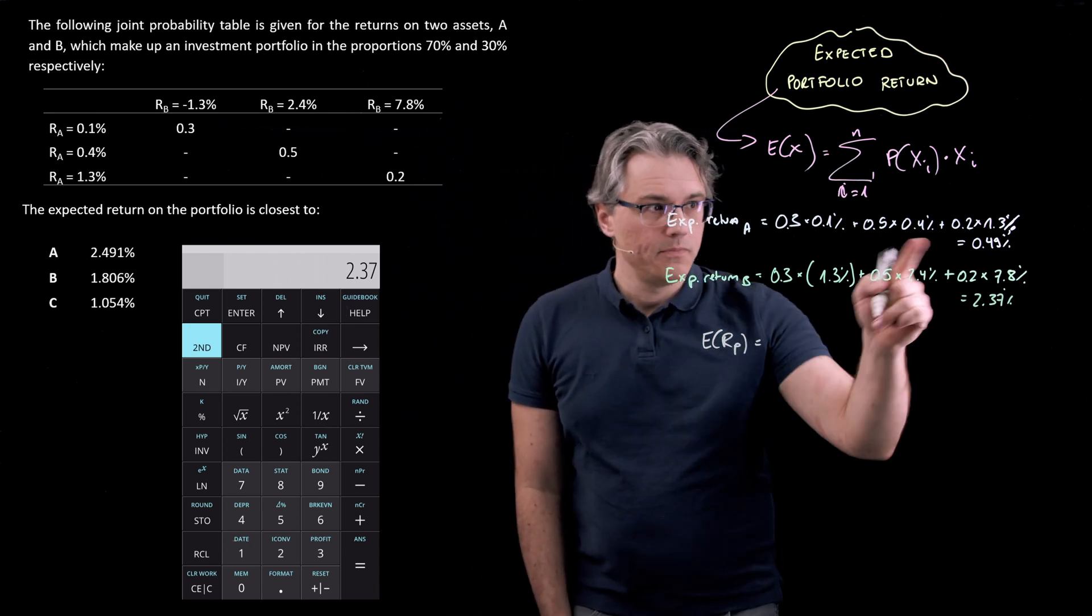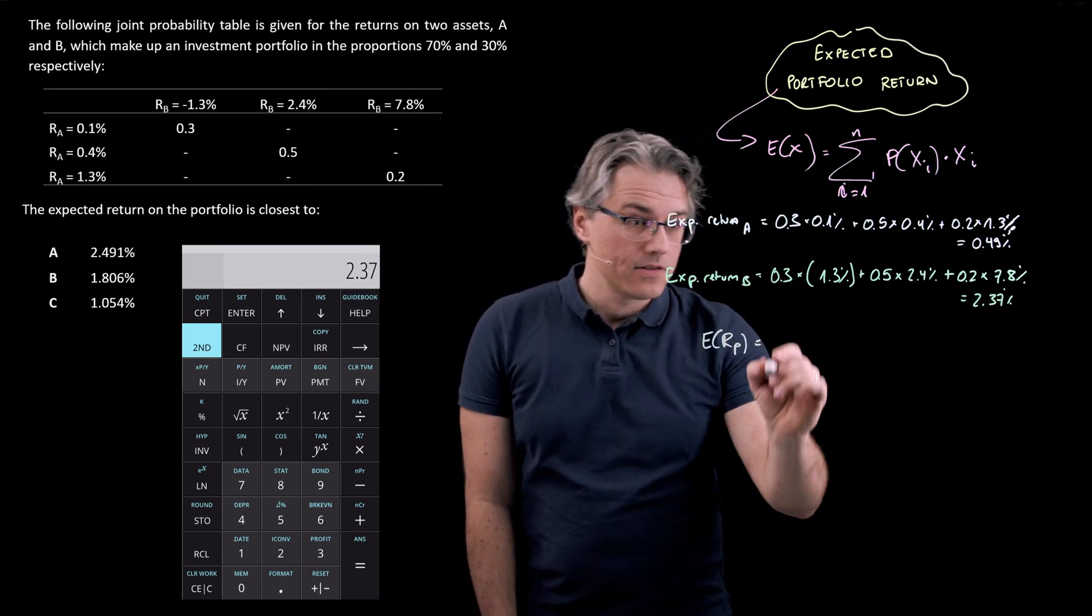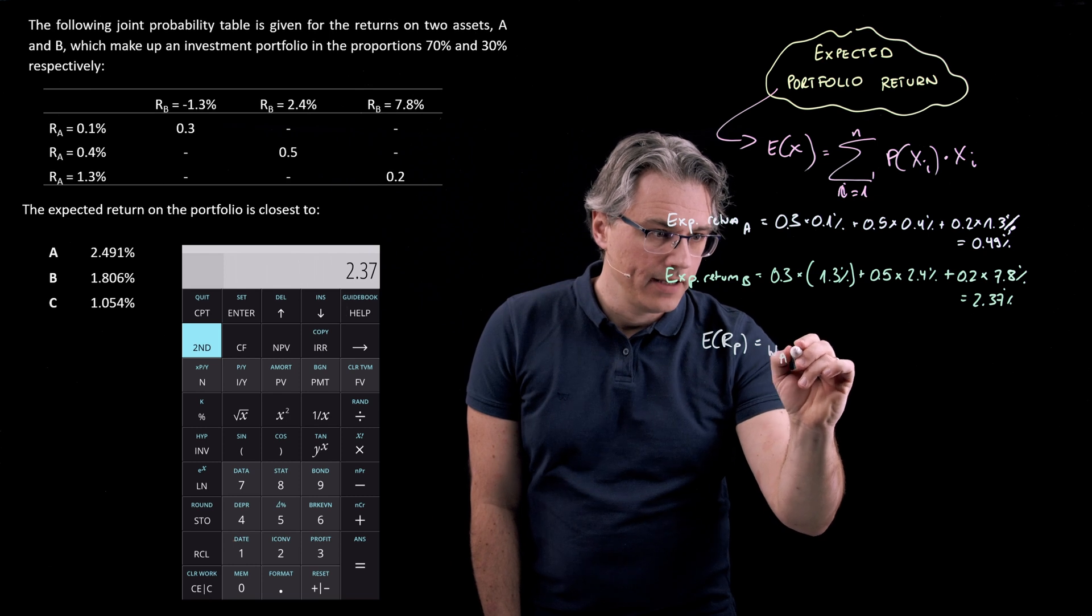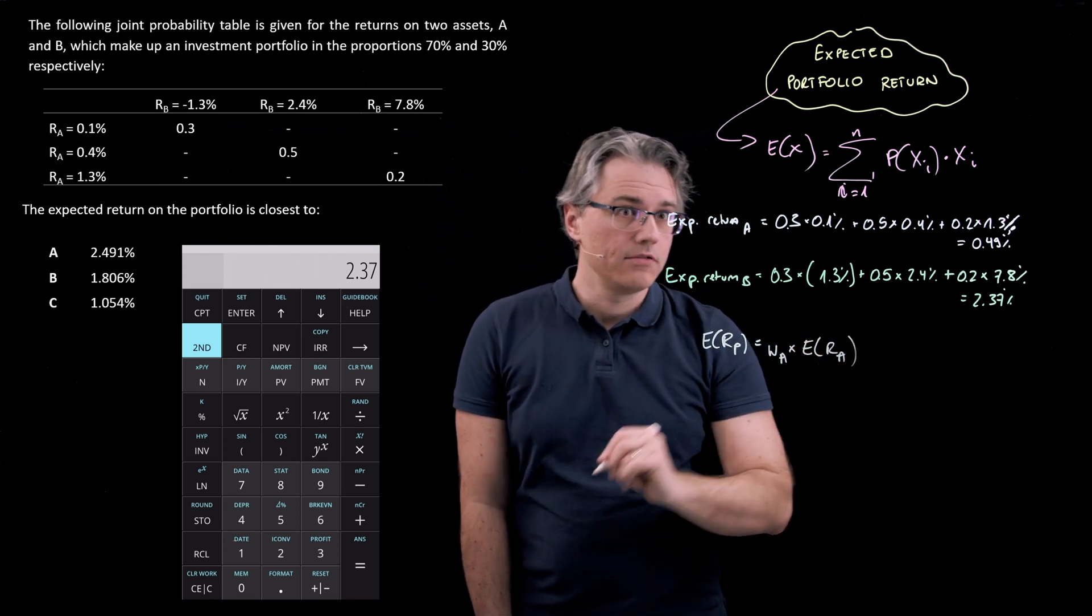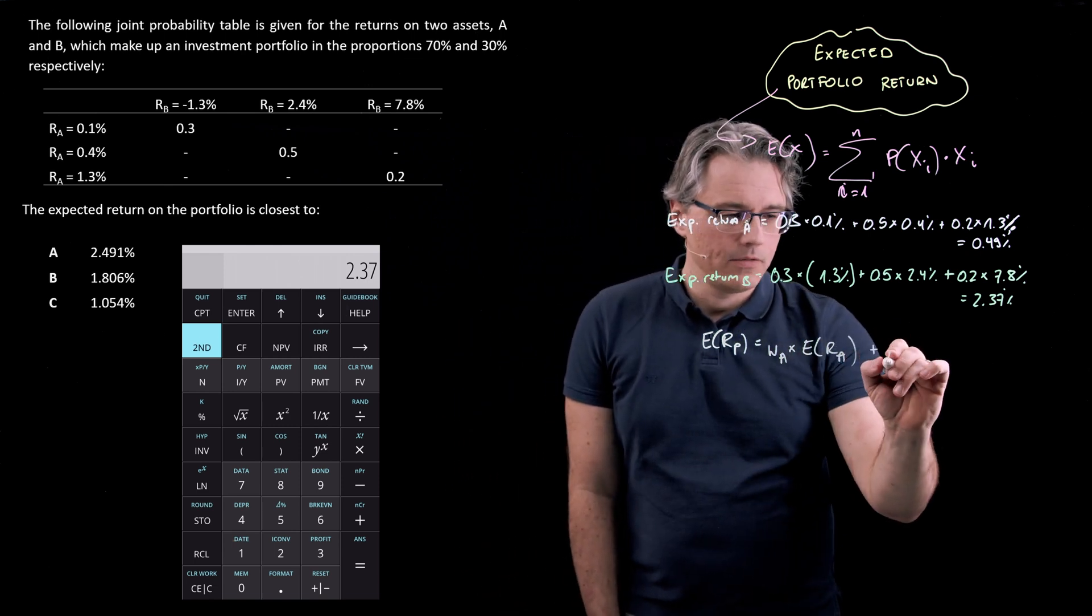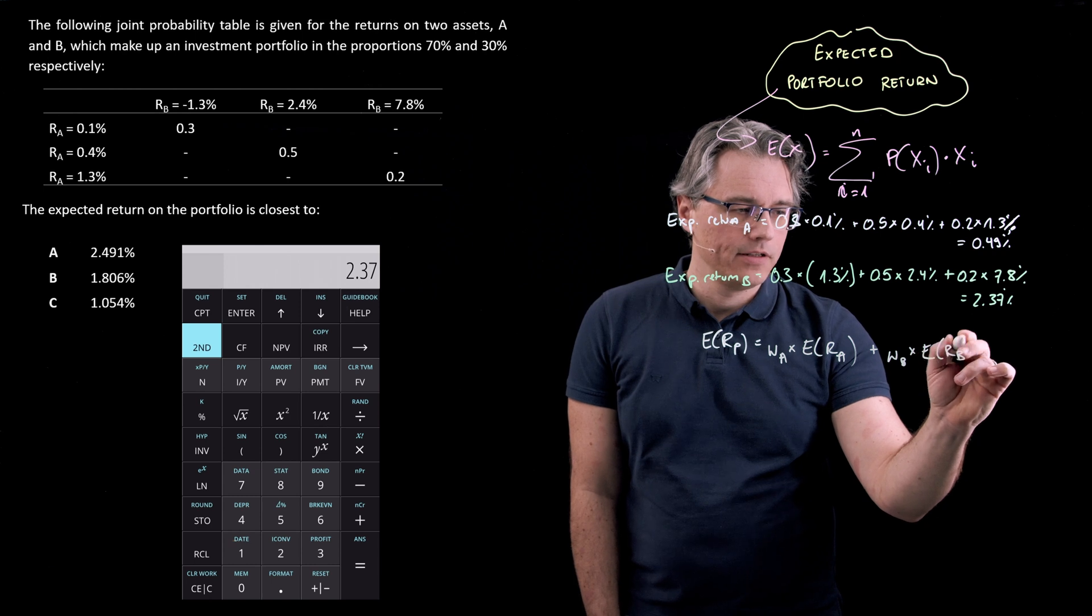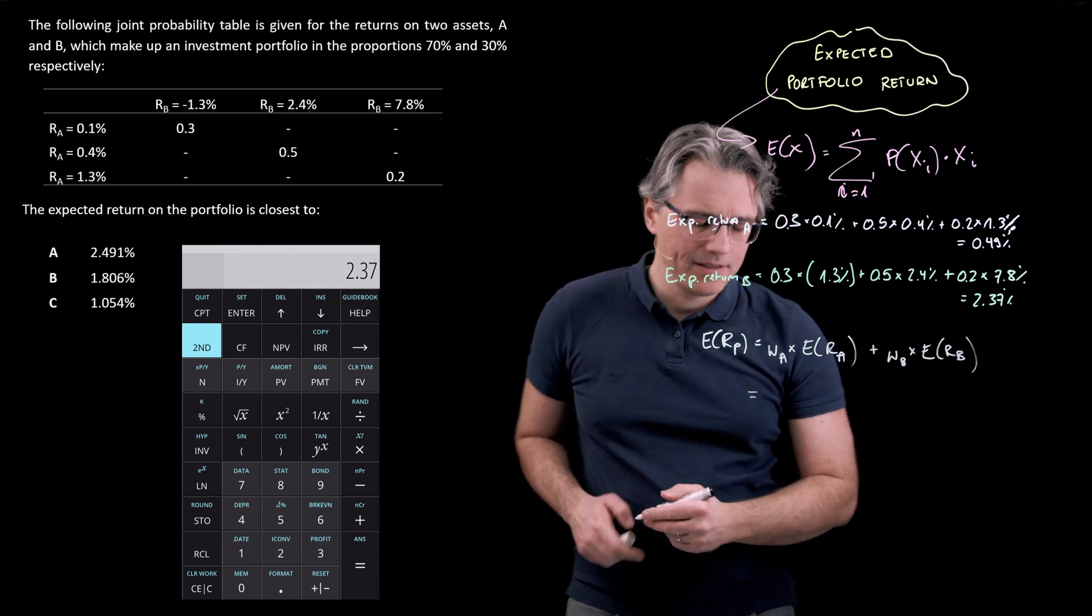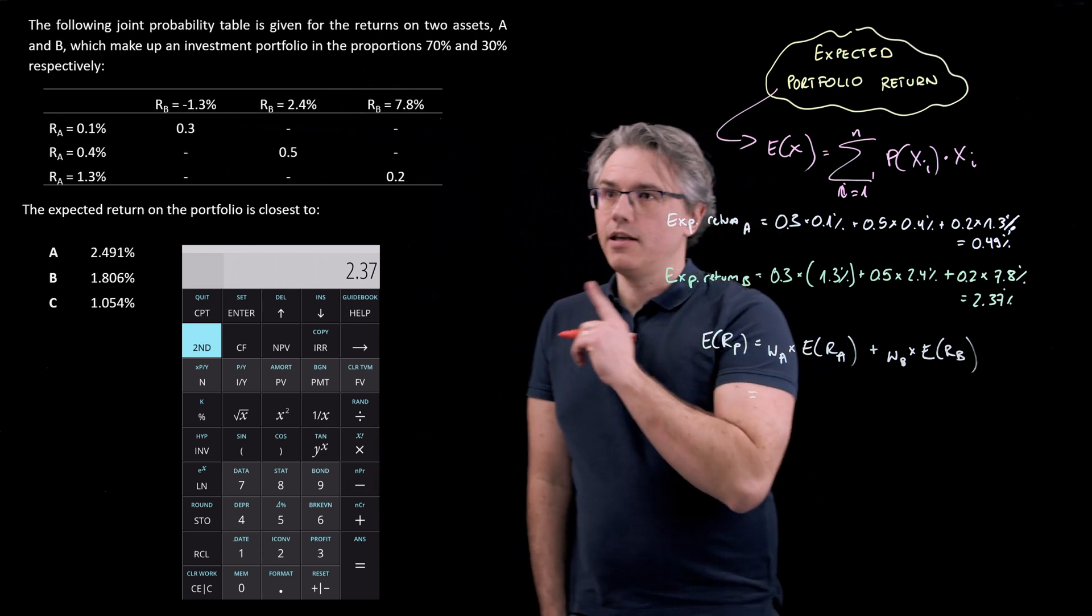That's going to be whatever was the weight of the first asset. So weight of A times its expected return, so expected return on A, plus the weight of B times its expected return. So a very, really simple and intuitive formula to apply.